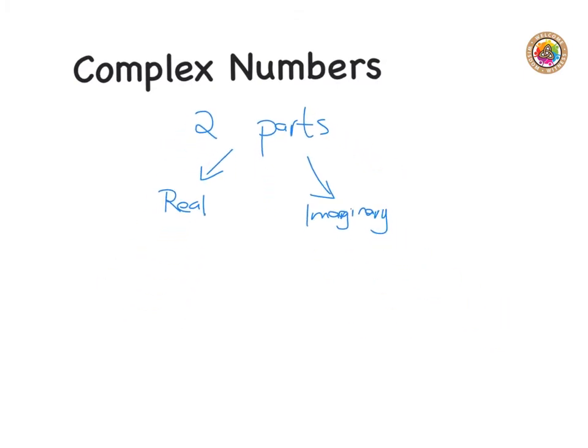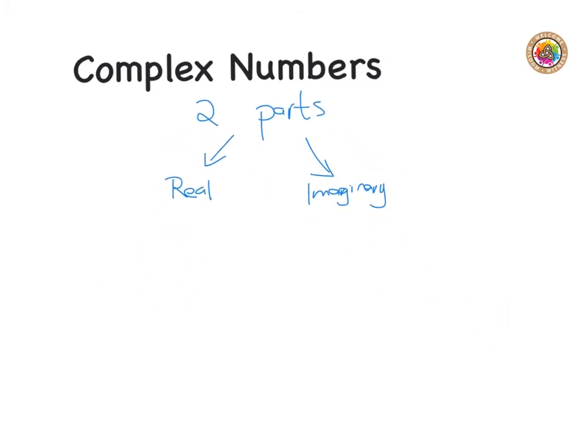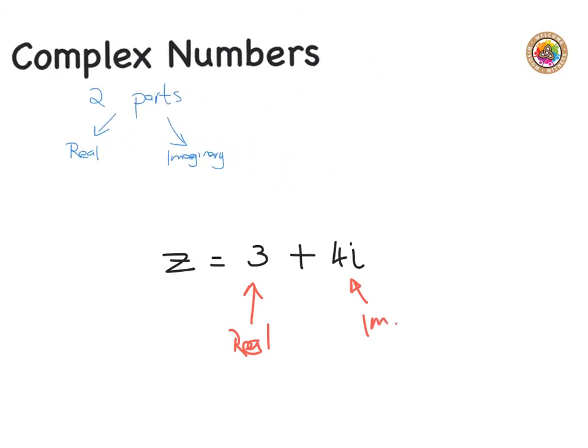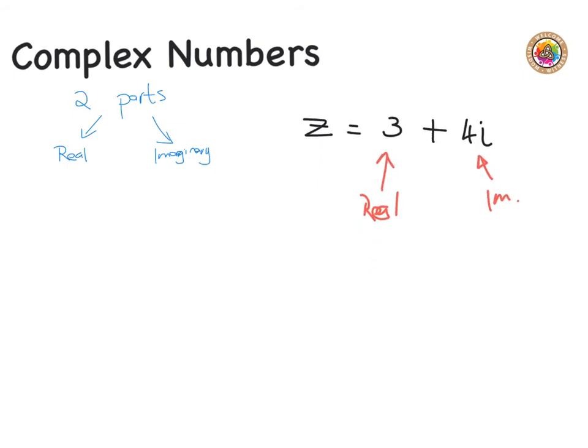Generally complex numbers look something like this. They might be written like z is equal to 3 plus 4i. We can see this is the real part, it's a real number that we're used to before, and the part that has the i is the imaginary part. We might have something that says z is equal to 2 minus 7i, and again we know here we have the real and here we have the imaginary.